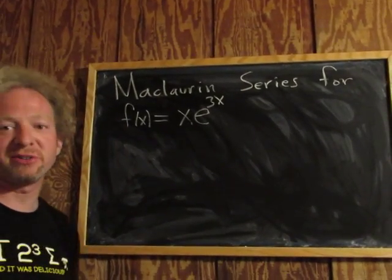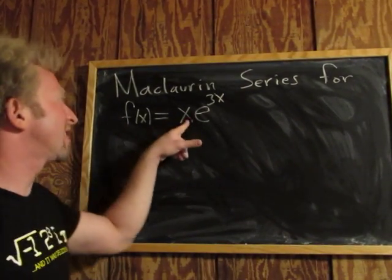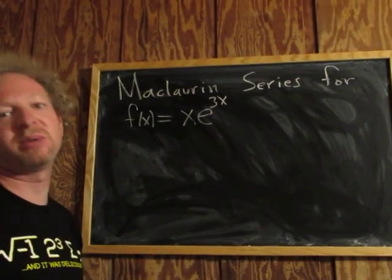Okay, so in this video we're going to find the Maclaurin series for the function x times e to the 3x. This is a really easy problem.